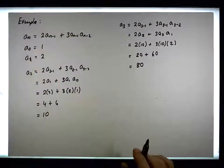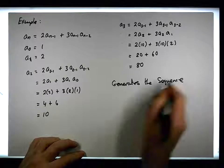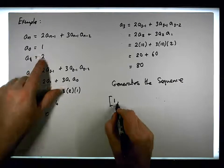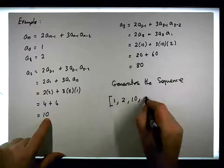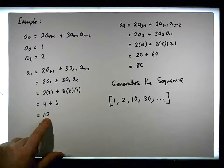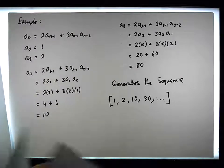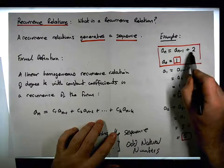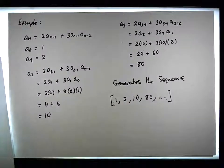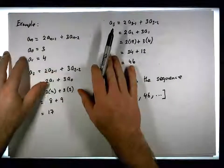So this particular recurrence relation generates the sequence: the a₀ term is one, the next term a₁ is two, then a₂ is ten, and the term after that is 80, and so on. What I was really trying to get across is that we can have many different ways to define recurrence relations. In the second example, we defined the nth term in terms of the previous terms plus a constant.